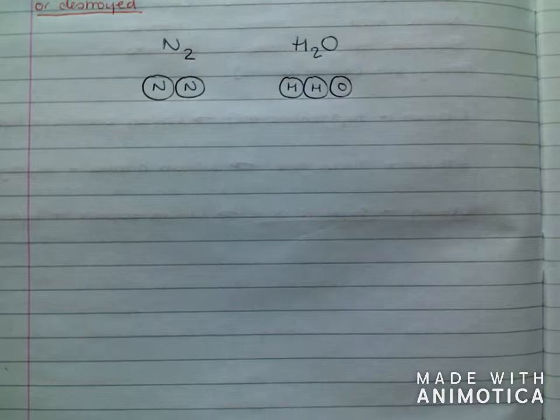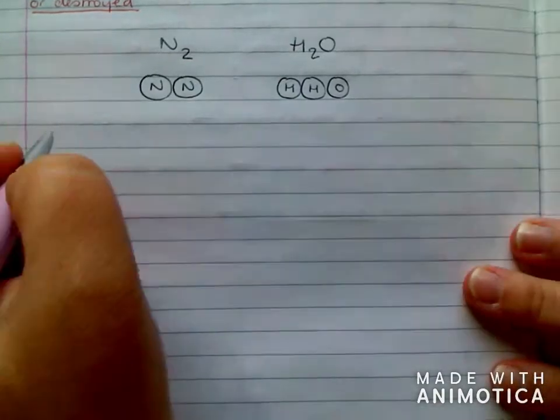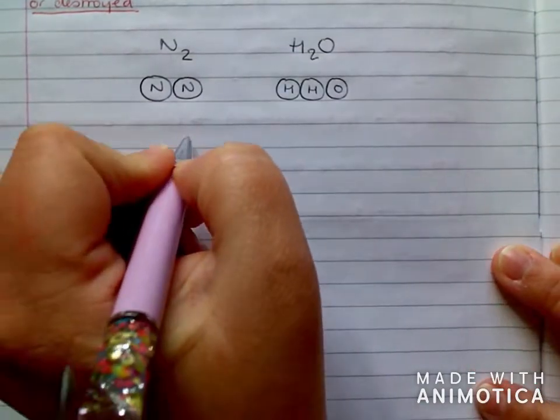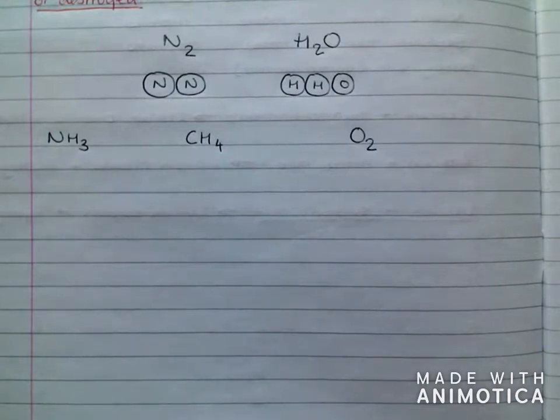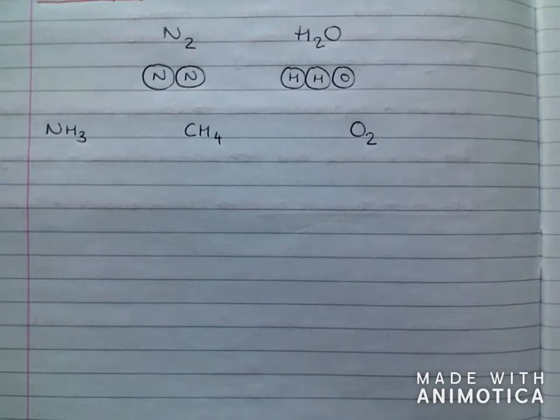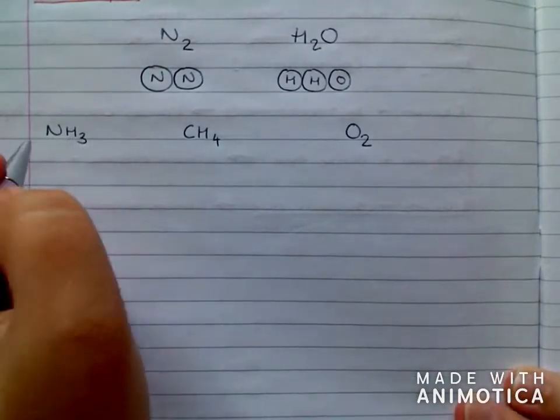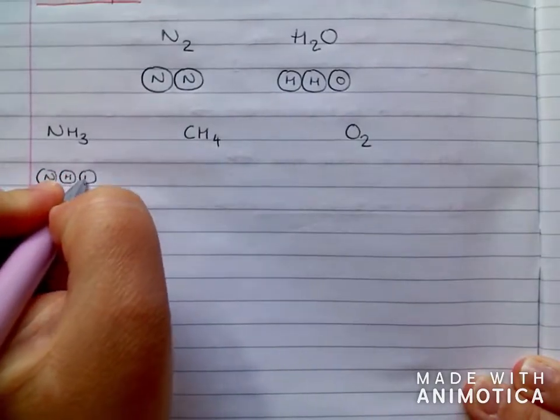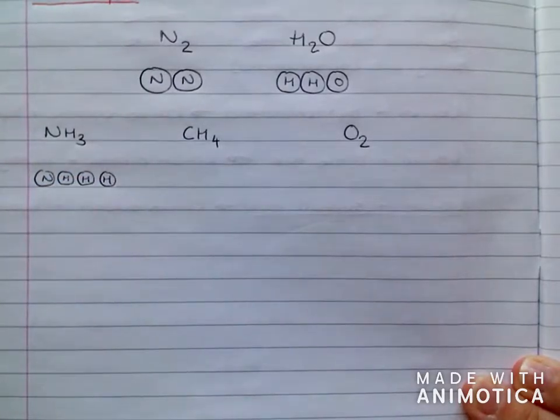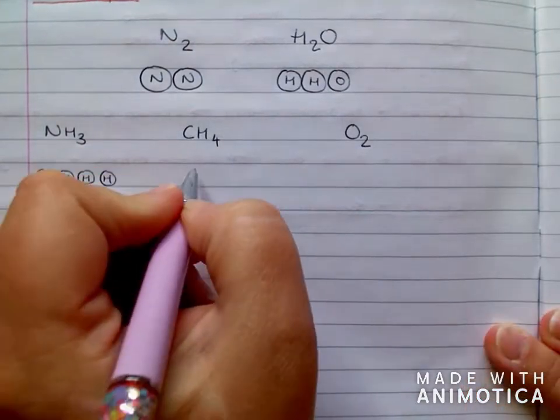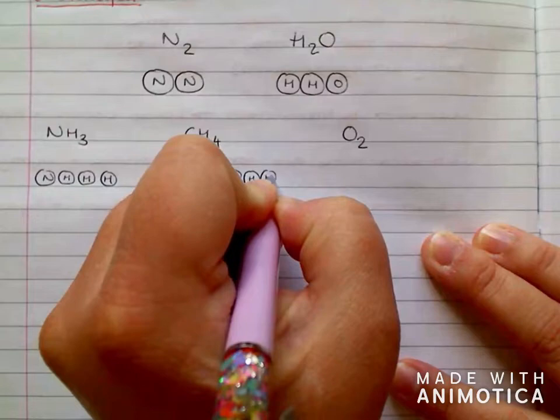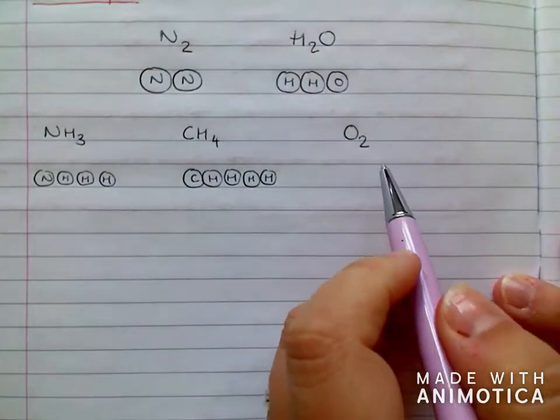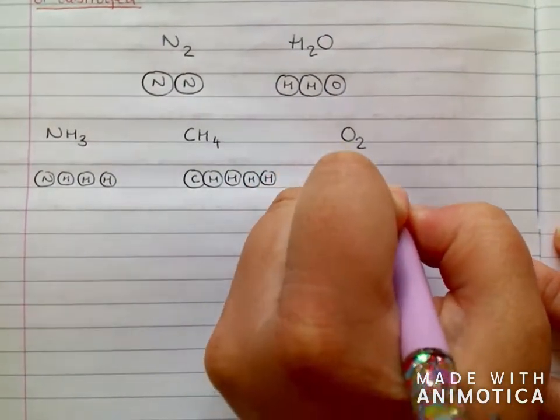Now, what I would like you to do is pause the video now. And I would like you to have a go at these three: NH3, CH4 and O2. So, please pause the video and do those now. Right, so hopefully you've had a go at those now. Let's go over the answers. So, NH3, you should have got one nitrogen and three hydrogens. CH4, hopefully you've got one carbon and then four hydrogens. And lastly, O2, you should have got simply two oxygen.